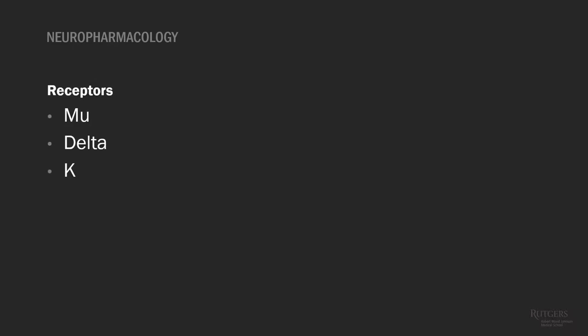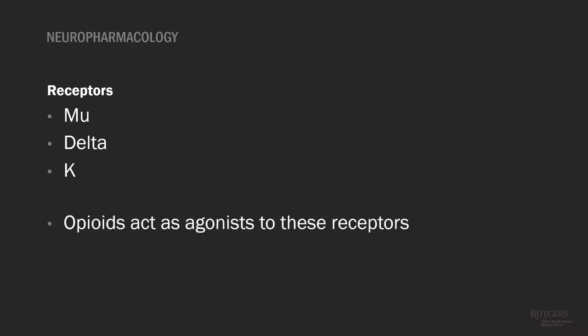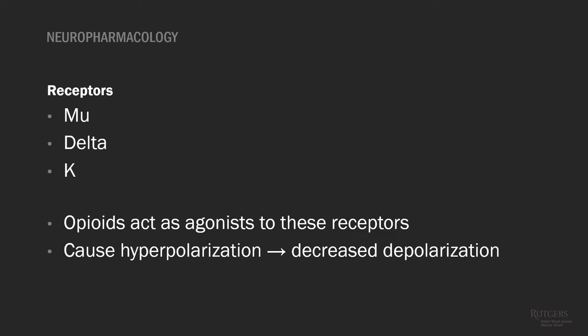In terms of neuropharmacology, there are different types of receptors that opioids act upon — mu, delta, and kappa receptors. Most opioids have the largest effect on mu receptors, acting as agonists. These receptors function in pain control and are found in various locations, specifically the spinal cord and also the gut. Because opioids are agonists, they lead to overstimulation of these receptors, hyperpolarization of the affected nerve cells, decreased depolarization, and then the receptors become less sensitive to pain stimulation.